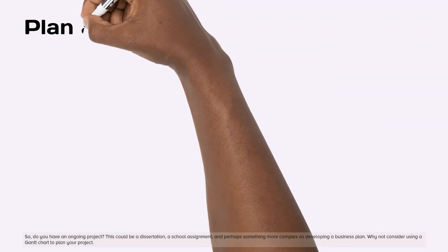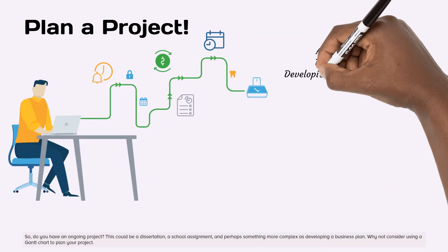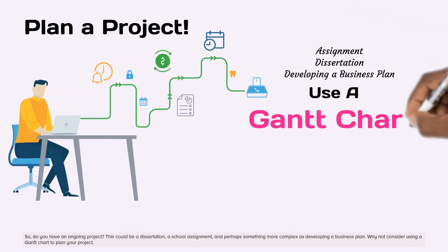So, do you have an ongoing project? This could be a dissertation, a school assignment, or perhaps something more complex as developing a business plan. Why not consider using a Gantt chart to plan your project?